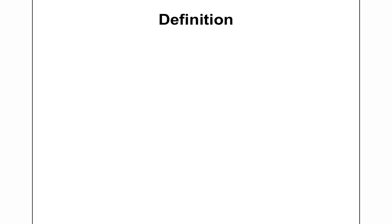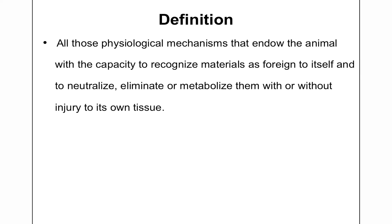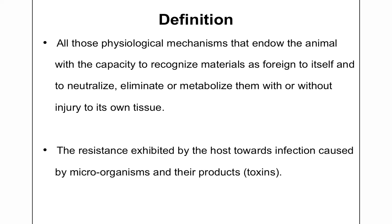We will start with the definition of immunity. Immunity can be defined as all those physiological mechanisms that endow the animal with the capacity to recognize materials as foreign to itself and to neutralize, eliminate, or metabolize them with or without injury to its own tissue. In other words, immunity is the resistance exhibited by the host towards infection caused by microorganisms and their products like toxins.